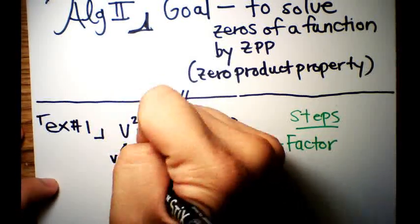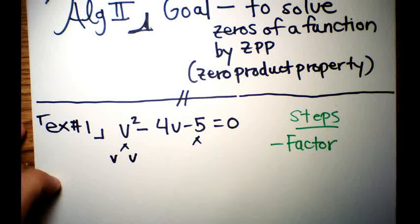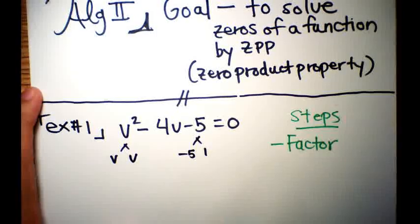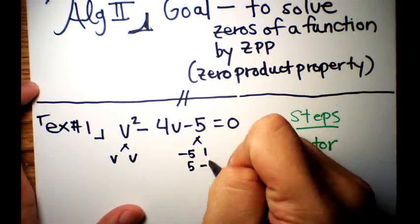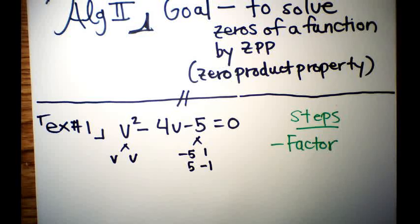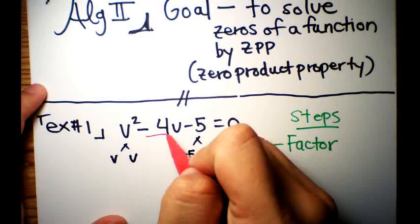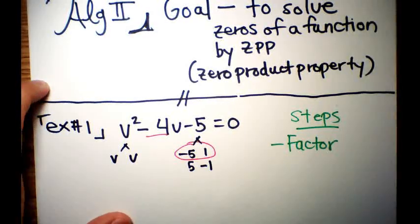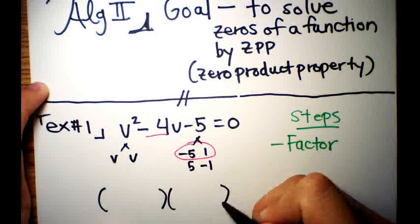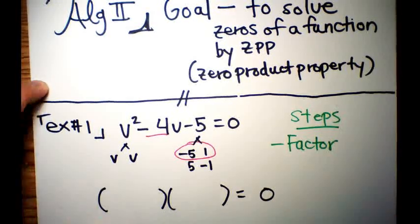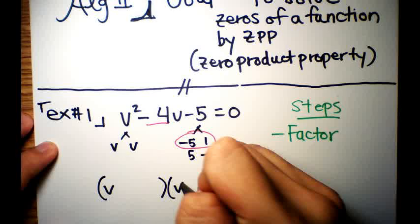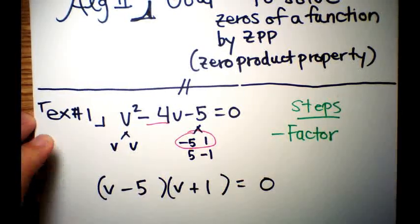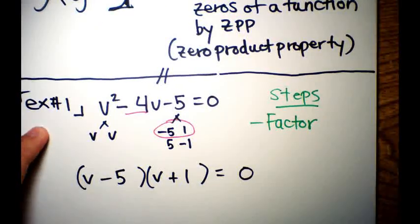v² splits as v and v. Your last number is negative 5, so the pairs are: negative 5 and 1, or 5 and negative 1. Which pair adds up to negative 4? It's negative 5 plus 1. So we write two parentheses: (v - 5)(v + 1) = 0.